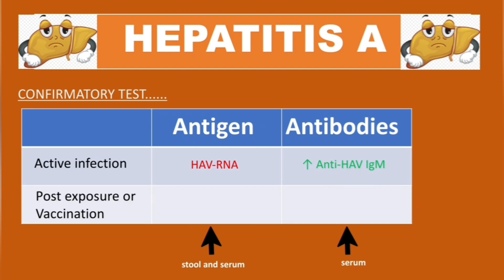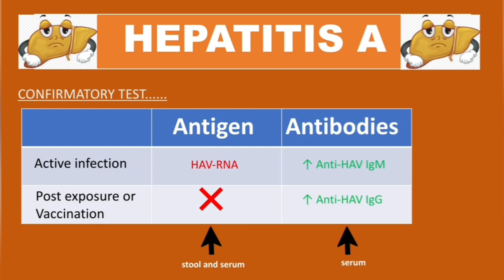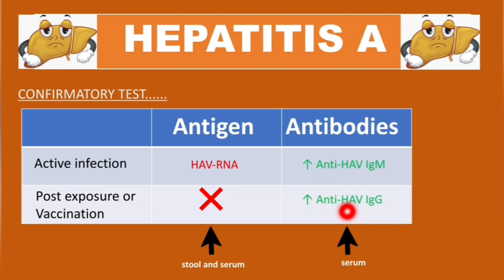In post-exposure cases — whether from prior infection or vaccination — no HAV RNA antigen is detected, but serologically, anti-HAV IgG is present. These IgG antibodies last for decades, in contrast to anti-HAV IgM, which disappears by three to six months after resolution.